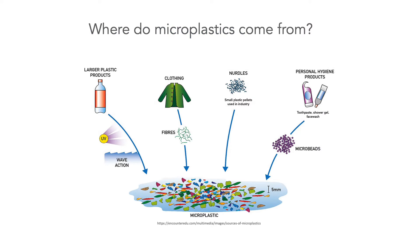How do microplastics end up in the oceans and where are they coming from? Some environmental pollution is from littering, but much comes from storms, water runoff, and winds that carry larger plastic items such as water bottles and microplastics into the ocean. They also consist of the breakdown of fibers from clothing, nurdles which are small plastic pellets used in manufacturing plastic products, and microbeads found in personal hygiene products such as toothpaste, shower gel, and face wash.